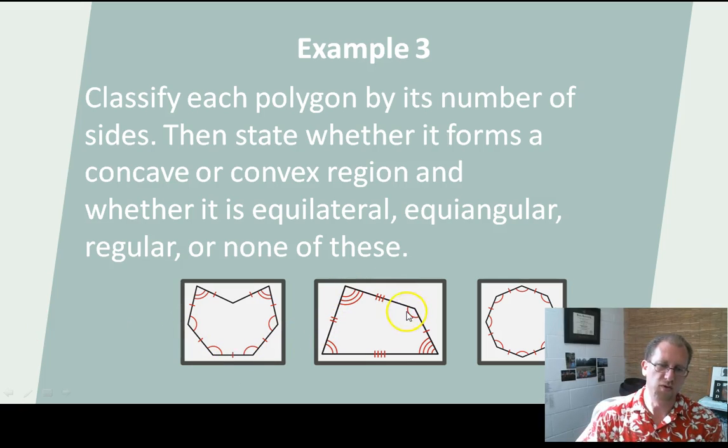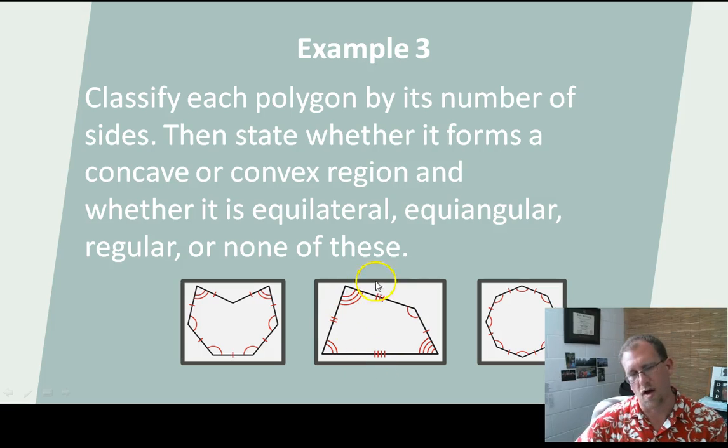Here we have a quadrilateral. One, two, three, four sides. It's quadrilateral, and it is convex. There's no place where you can go from edge to edge and be outside the figure. So this is a convex quadrilateral. These two sides are of the same length, but these two sides are dissimilar, so it's not equilateral. And all four angles are different, so this is not equangular. This is an irregular quadrilateral convex.